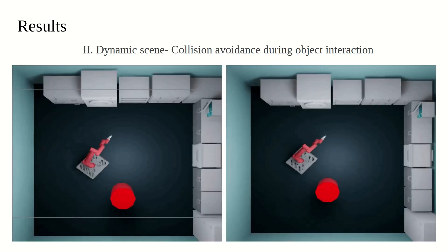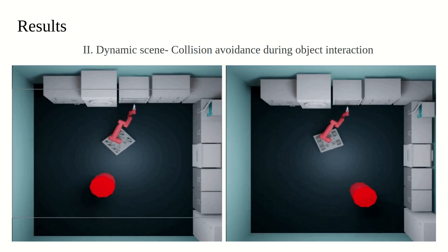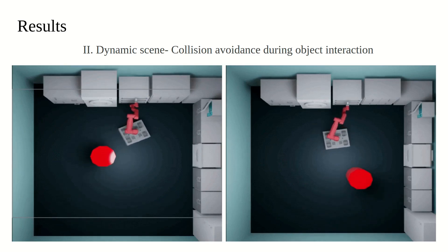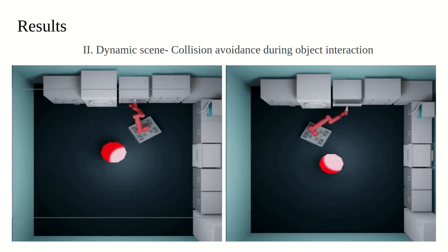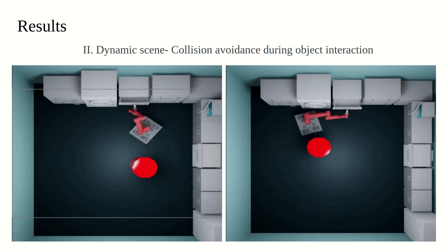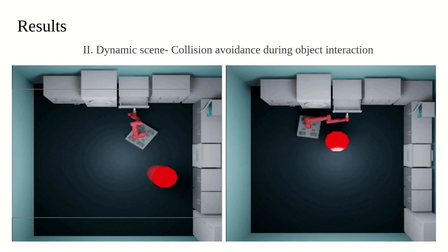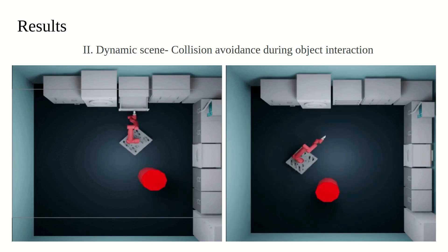Real-time capability is further put to test in dynamic scenes where an obstacle moves around at a speed of 50 cm per second. Even when the object is close to the robot, the MPC planner moves the base and the arm such that contact with the articulated object is still maintained while a collision is avoided.